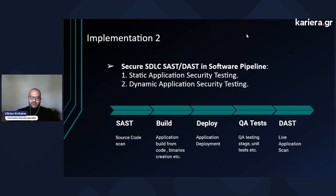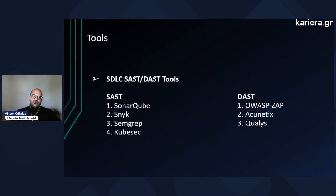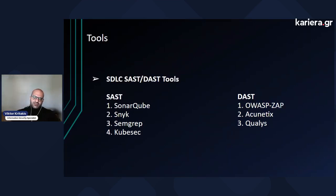For SAST tools we have SonarQube, Snyk, Semgrep, and Kubesec for Kubernetes deployments. For DAST we have OWASP ZAP, Acunetix, and Qualys — three tools that can be easily integrated into a security and software pipeline to perform dynamic application security testing.